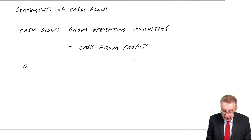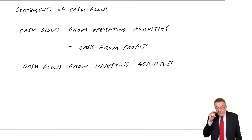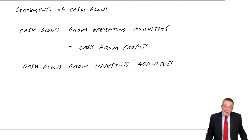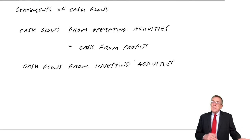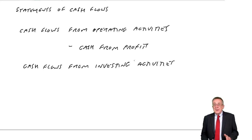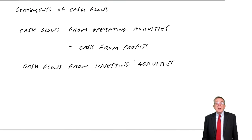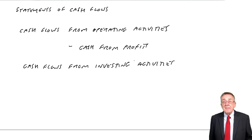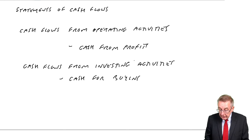The second heading you can see is cash flows from investing activities. Essentially, we're looking at the cash flows from buying and selling non-current assets. If we buy non-current assets, we're investing, but there's a cash payment — a cash outflow. Similarly, if we sell any non-current assets, we're receiving cash — a cash inflow. So it's basically the cash for buying and selling non-current assets.